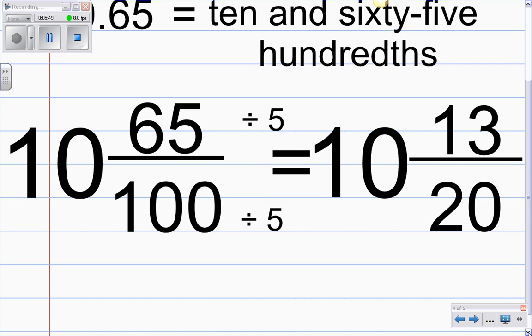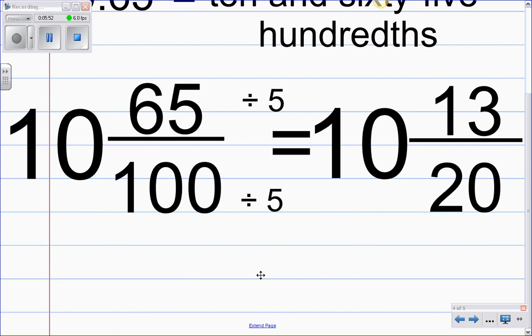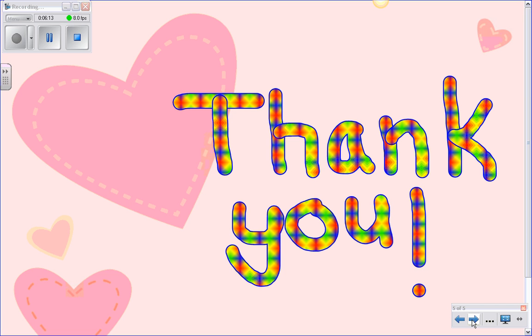So what we can conclude is that our original decimal 10.65 or ten and sixty-five hundredths is equal to 10 and 13 twentieths after it's been reduced in fraction form. I hope this helped you. I hope this tutorial can make it a little easier for you to write fractions from decimals and convert those decimals into fractions.